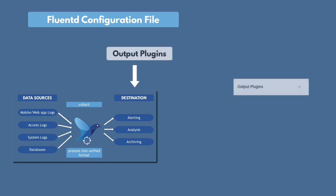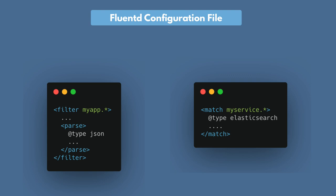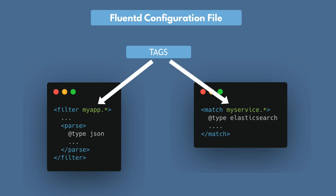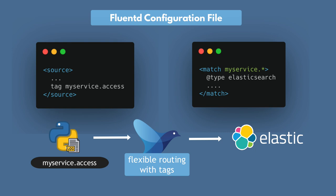Finally, you have the output — where should the logs go? And for each output target, there is a plugin like Elasticsearch, MongoDB, and so on. As you can see in the example configuration file, Fluentd has a concept of tags, which you can use to group together logs or to filter logs. Using these tags, you can say: I want all logs with tag 'my app' to be parsed like that, or I want logs with the tag 'my service' to go to Elasticsearch. And also using these tags, you can easily filter out any unneeded logs to save resources — and that's why the flexible routing is so easy to configure.